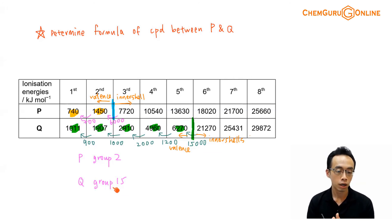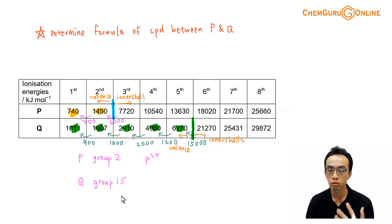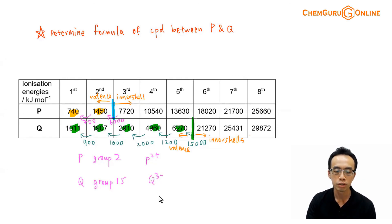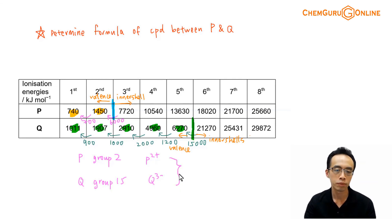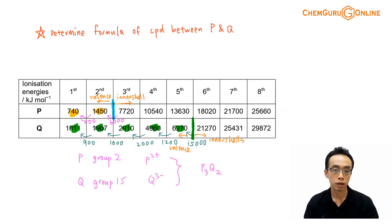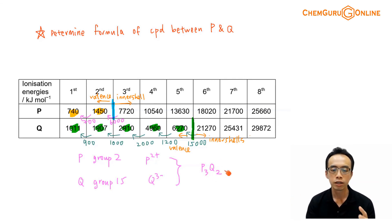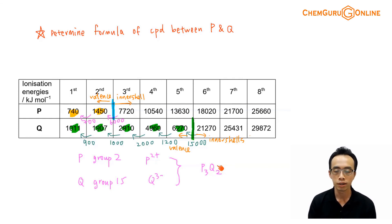When P and Q form a compound, P will most likely lose two electrons to form P²⁺. Q, being a group 15 non-metal forming a compound with a metal, will most likely gain three electrons to form Q³⁻. Once we know the charges — P is +2 and Q is -3 — we combine them to give an overall neutral stable compound. We need 3 P atoms (giving a total of +6) and 2 Q atoms (giving a total of -6), so they cancel out. Therefore the formula of the compound between P and Q is P₃Q₂.